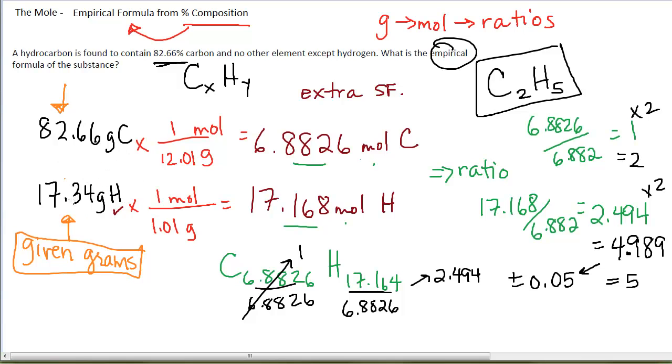You would still employ the same steps. Given that many grams of carbons and hydrogens, for example, you would change them to moles and then find the mole ratios. So it's exactly the same problem if instead of giving percent compositions, you're given grams to start with.